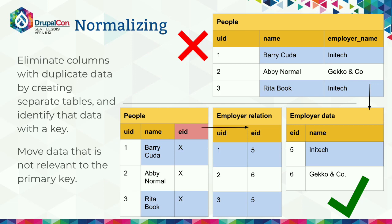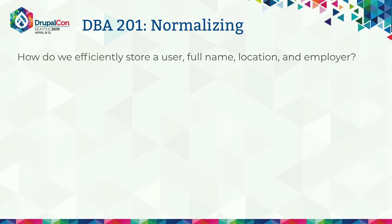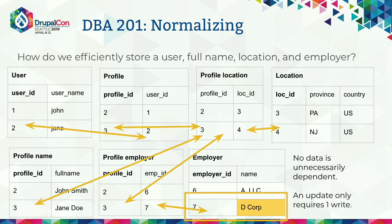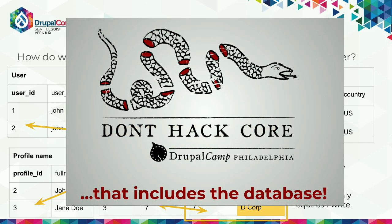Drupal itself does normalization along with many contributed modules. The core tables are pretty static while add-on functionality uses relation tables for data storage. If we look at efficiently storing a user with a full name, location information, and an employer, we start with the user table, apply normalization techniques, and end up with about seven tables necessary to store the data. Custom fields can be added to just about anything that uses the Field API, allowing Drupal to expand upon base tables without altering the structure. It also means updating only one row when a company name changes, versus an unknown number of rows. Don't hack core — that includes the database. Create a new table, use keys to add your own functionality.